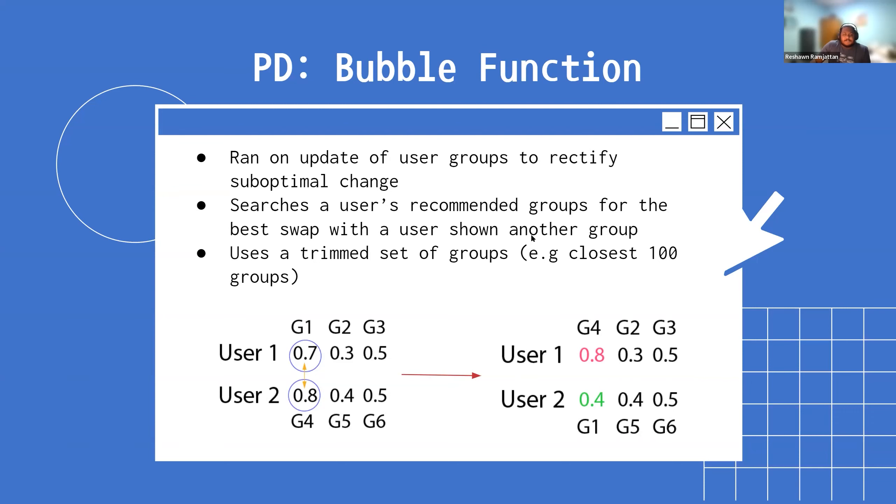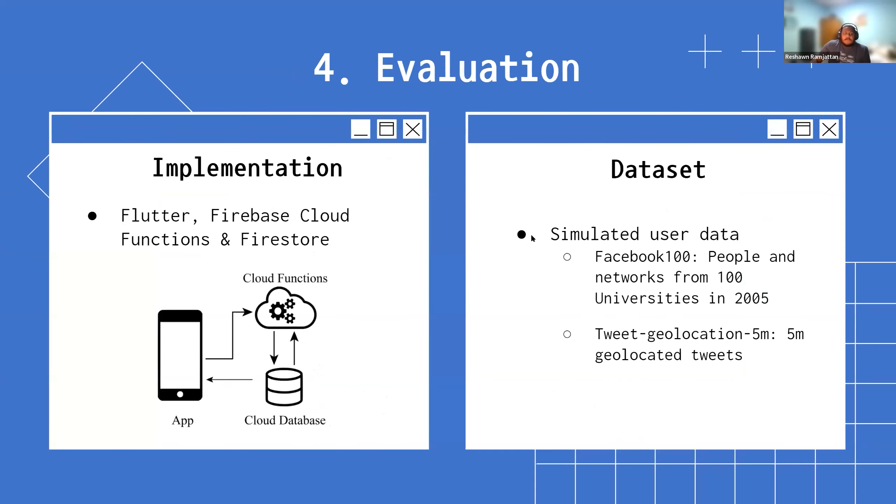We then implemented that entire framework using Firebase cloud functions and Firestore, and we implemented a testing app for evaluation using Flutter. Each of the events and the bubble function we just went through would have had their own cloud function, and all of the data would have been held in Firestore.